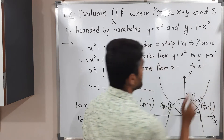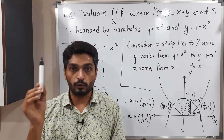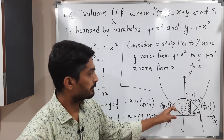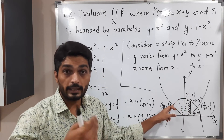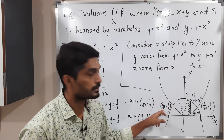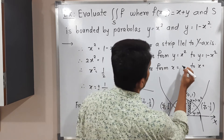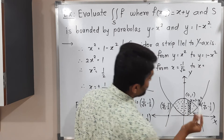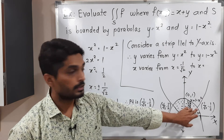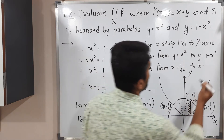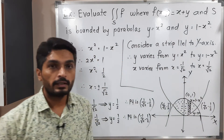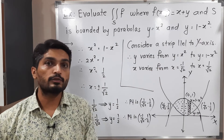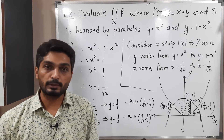The strip is bounded above by y = 1 − x². Moving the strip from left to right: on the left side it stops at x = −1/√2, and on the right side it stops at x = 1/√2. So limits of y are from x² to 1 − x², and limits of x are from −1/√2 to 1/√2.